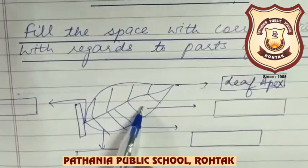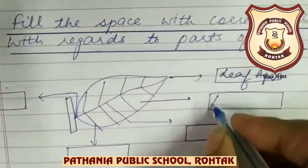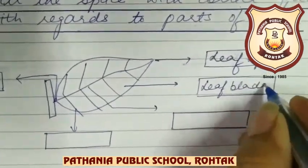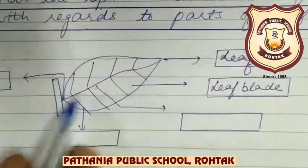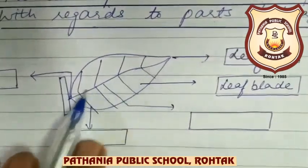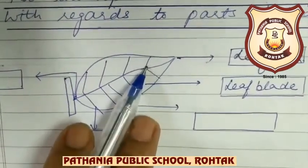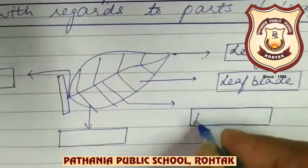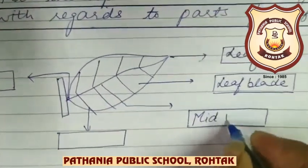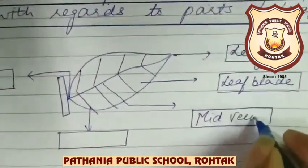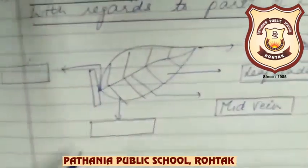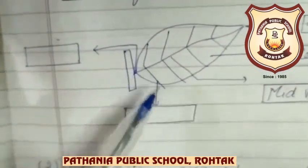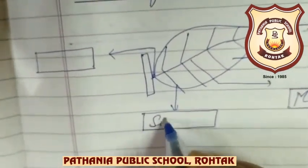The flat green part is called the leaf blade. The vein running in the middle is called the mid vein or middle vein. The veins that emerge from the middle vein are called the side veins.